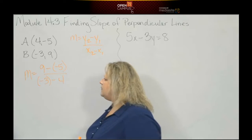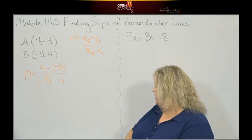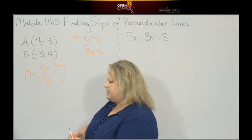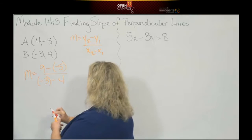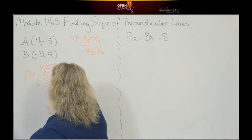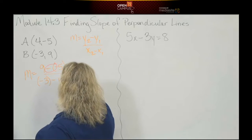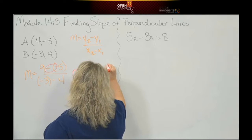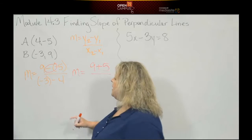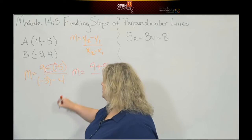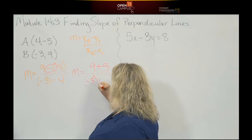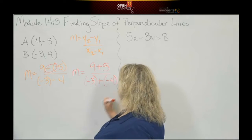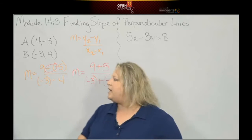Okay, so now when I rewrite this, I want to make sure I rewrite it with my addition. So let's do that. Two negatives make a positive, so that's going to give me m is now going to be equal to 9 plus 5. Here I'm going to do the opposite, so that's negative 3 plus the opposite of 4, which is negative 4.